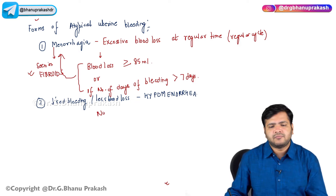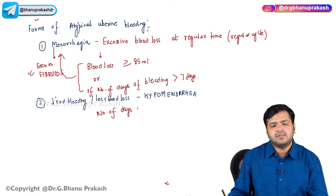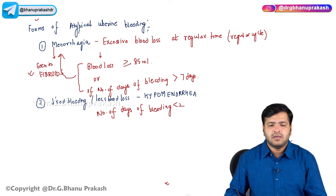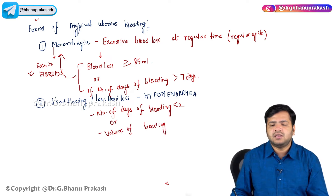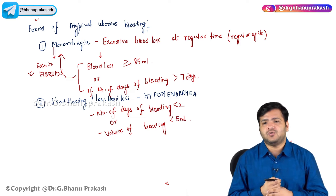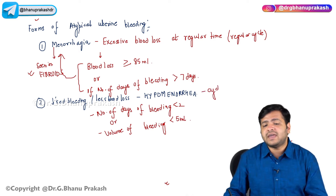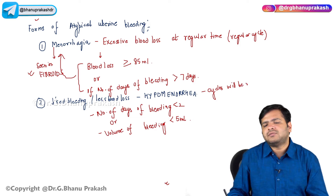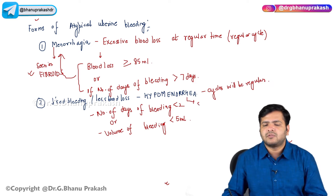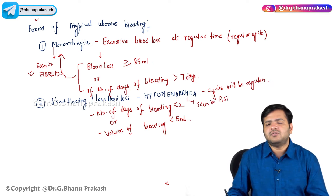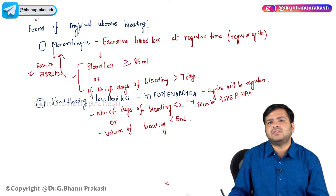If the number of days of bleeding is less than two, or if the volume of bleeding is less than 5 ml, then it is said to be hypomenorrhagia. In hypomenorrhagia, remember, the cycles will be regular. This hypomenorrhagia is seen in Asherman syndrome.